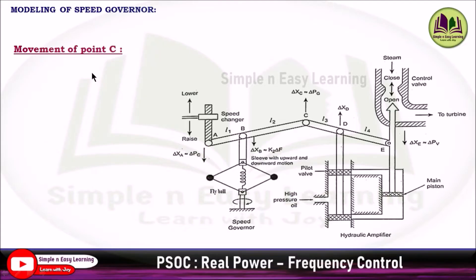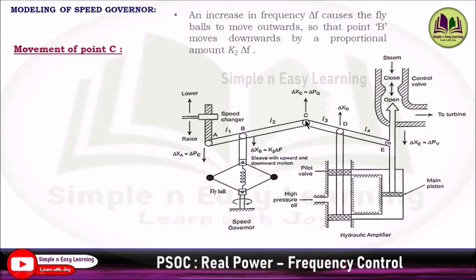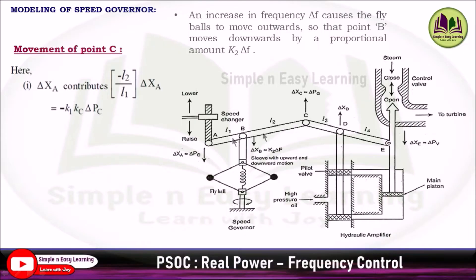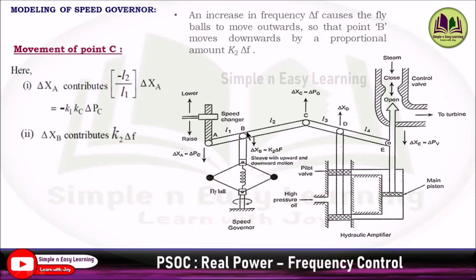Third, the movement of point C. Points C and E are linked and pivoted at point B. The movement of point C is decided by the movements of points A and B. The contribution from point A gives −(l2/l1) × del_Xa, where the ratio −l2/l1 is given as K1, and del_Xa = Kc × del_Pc.